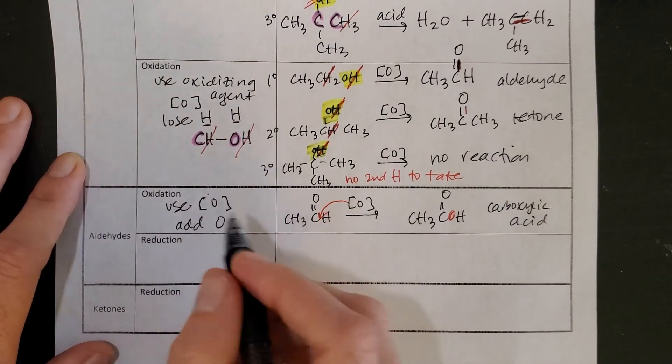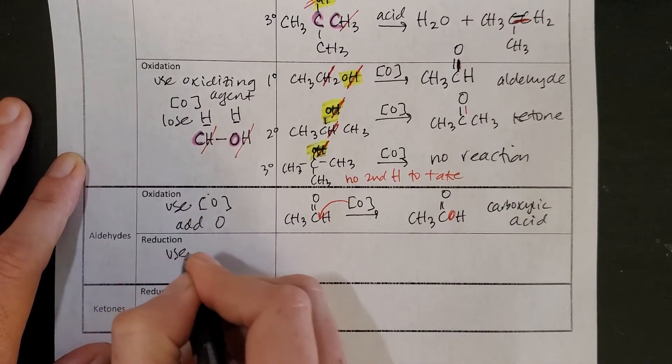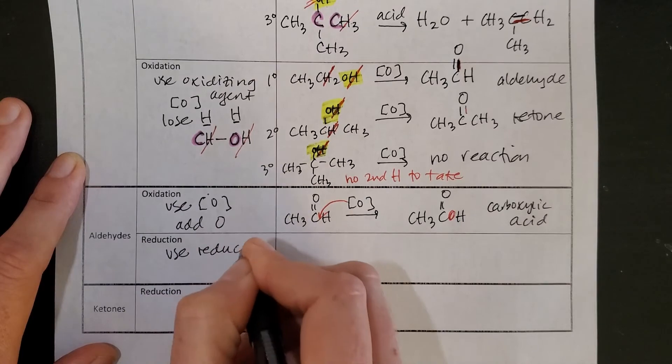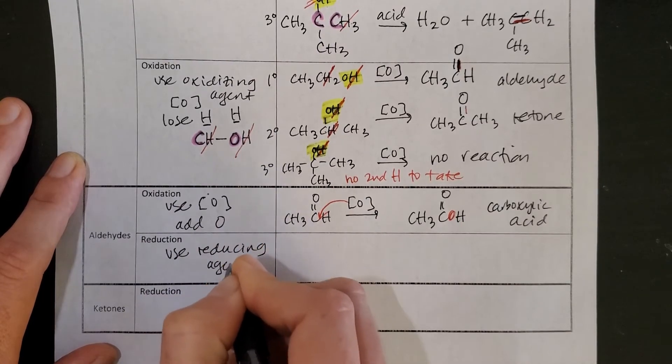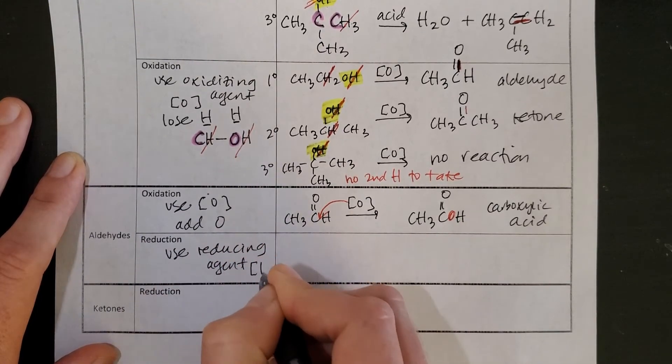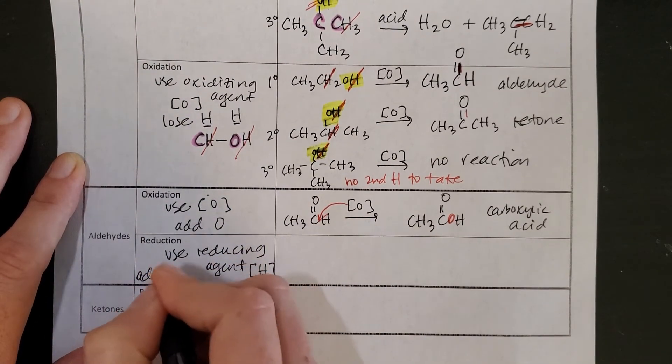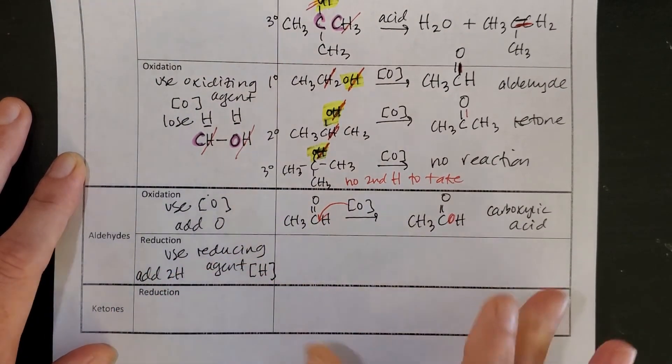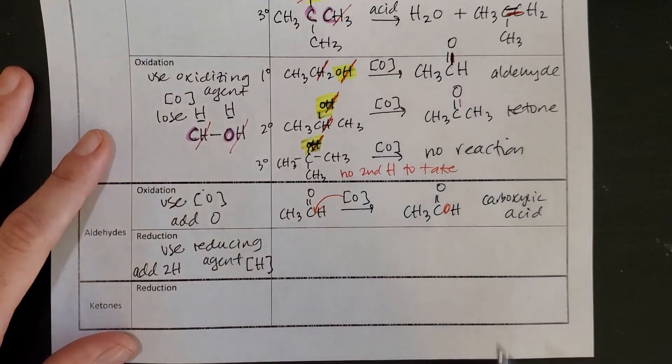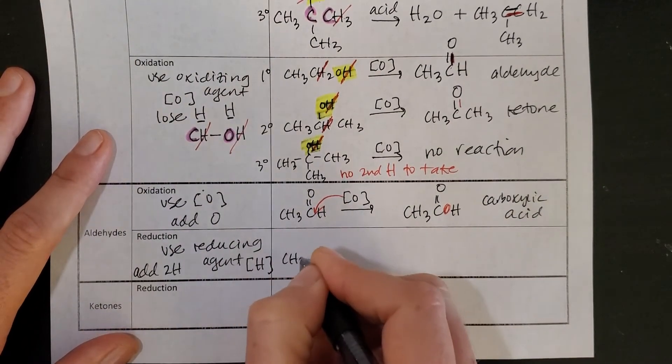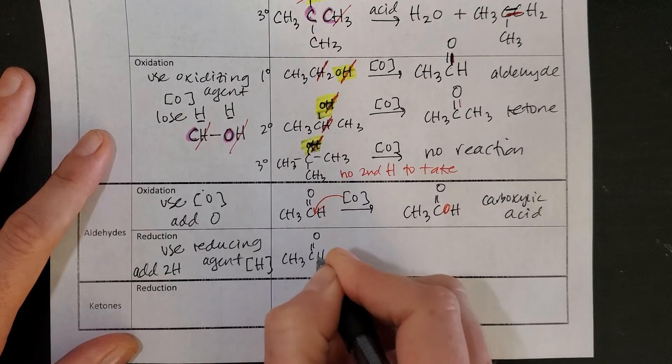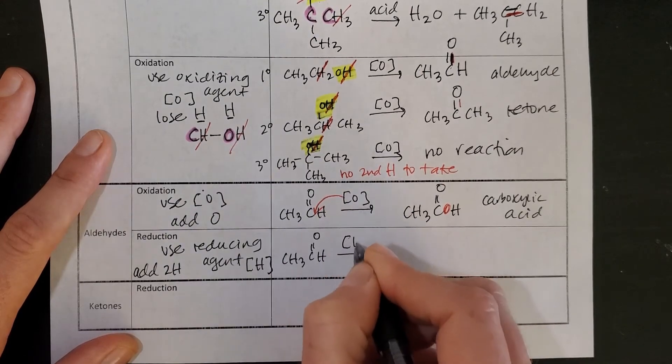Next up, I can also reduce aldehydes. So now we're going to use a reducing agent. And reducing agent is the bracket H. This is going to allow me to add two H's. So I want to add two H's. Same compound. But now we're going to do the opposite. So we have a reducing agent.